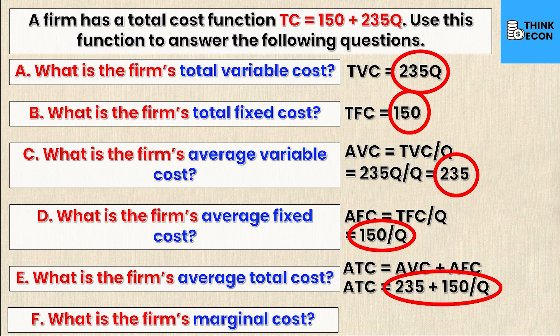The final question asks us for the marginal cost. Well, the marginal cost is the increase in the total cost when you increase the quantity output by one unit. Now, this happens to be a linear cost equation, which means that the marginal cost is just the slope of the total cost curve. And since it's linear and it follows the form Y equals MX plus B, then we know that the slope of this line is just 235.